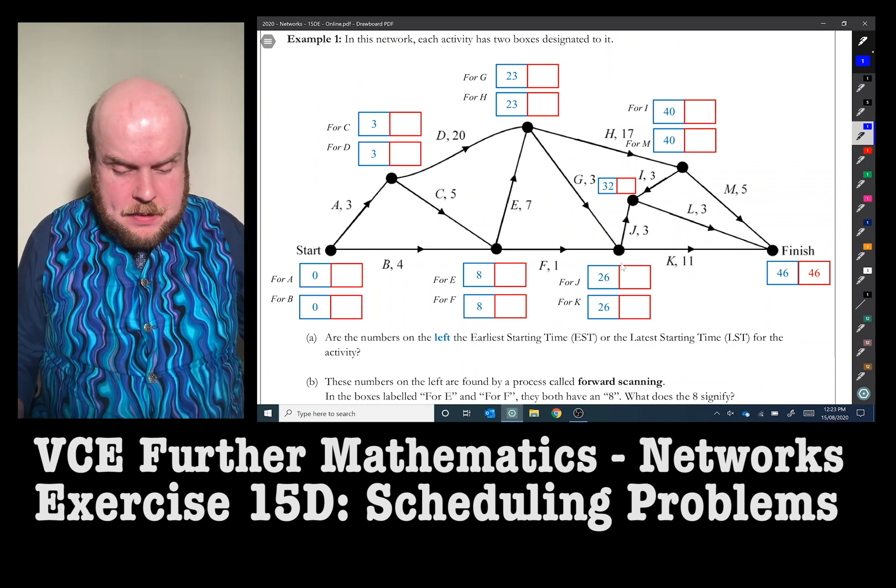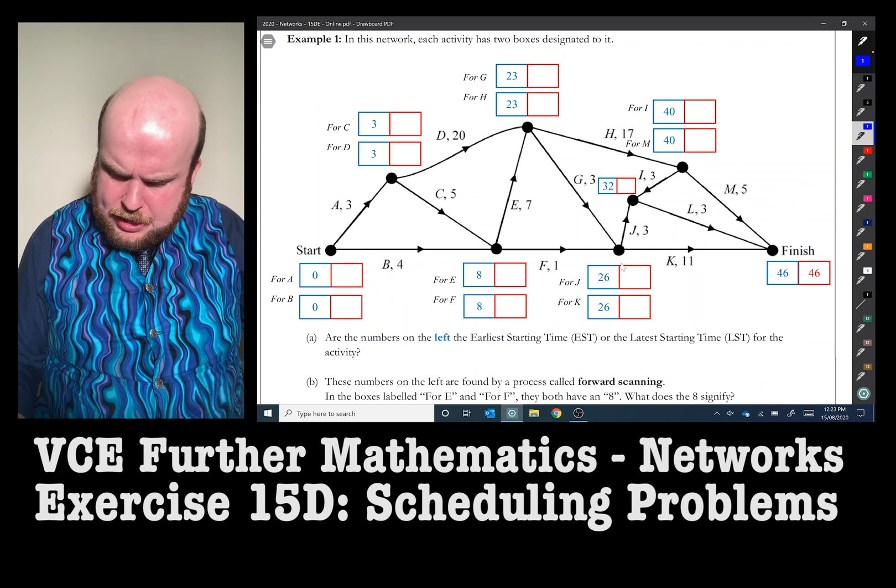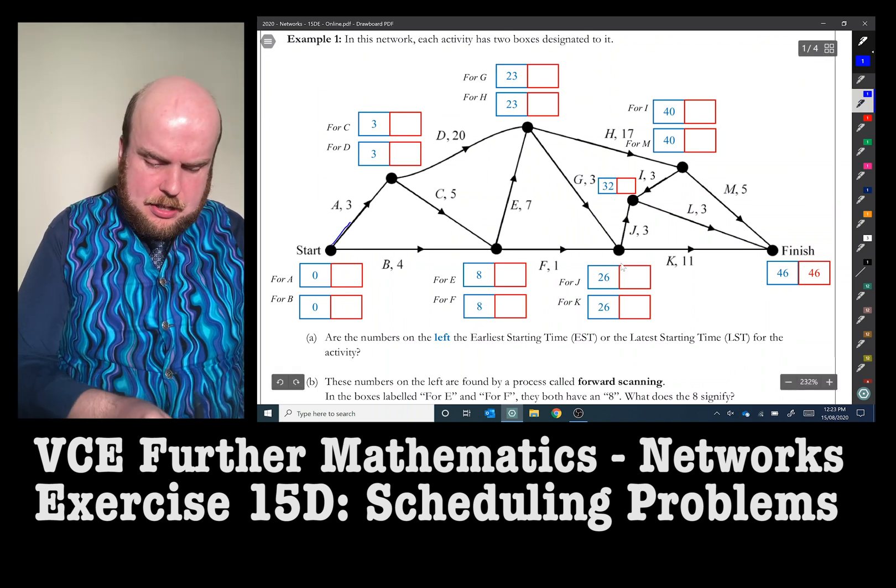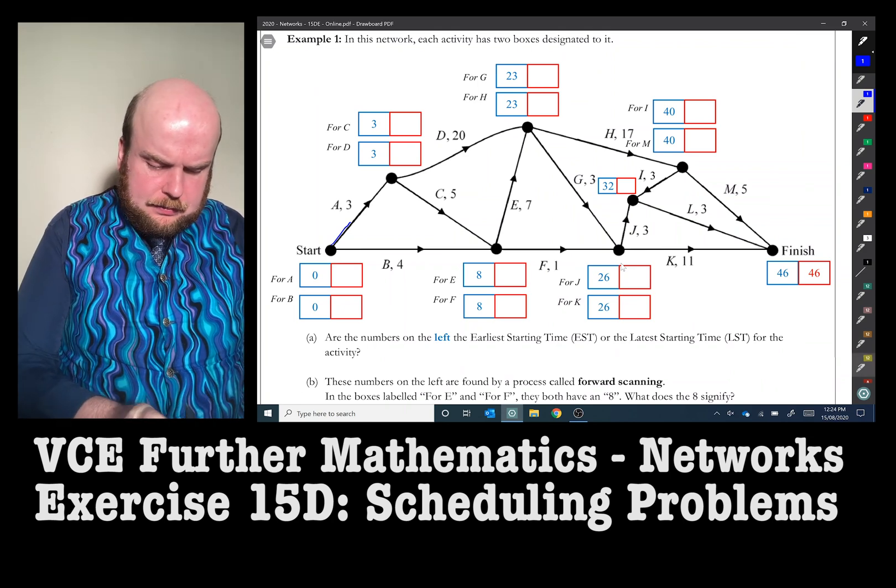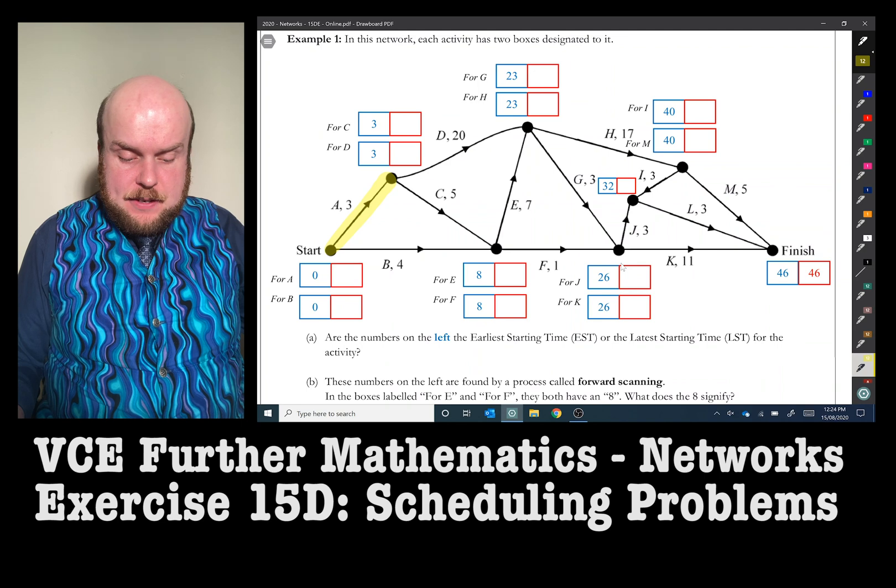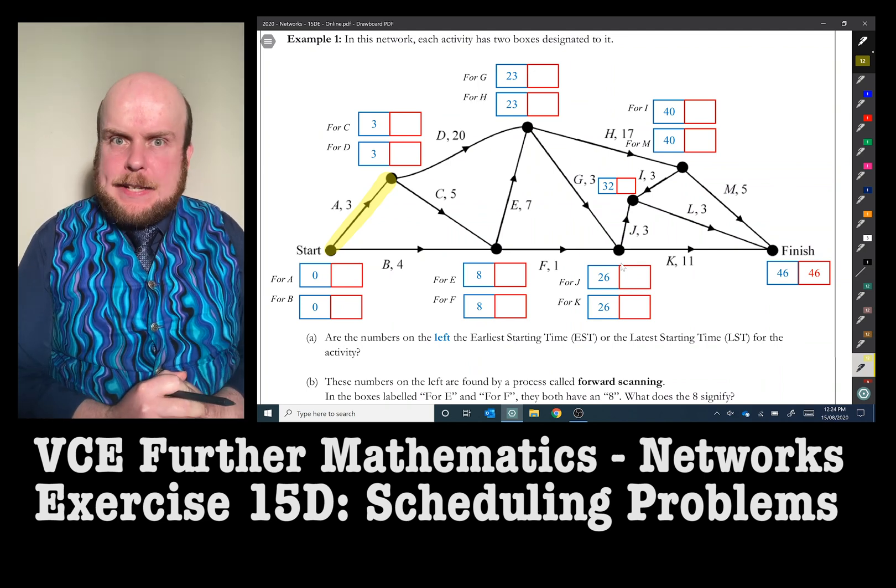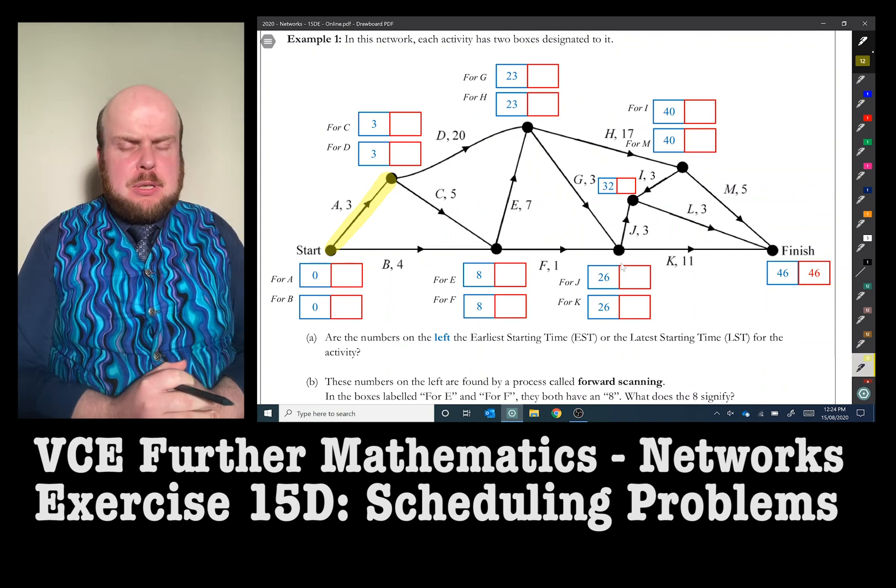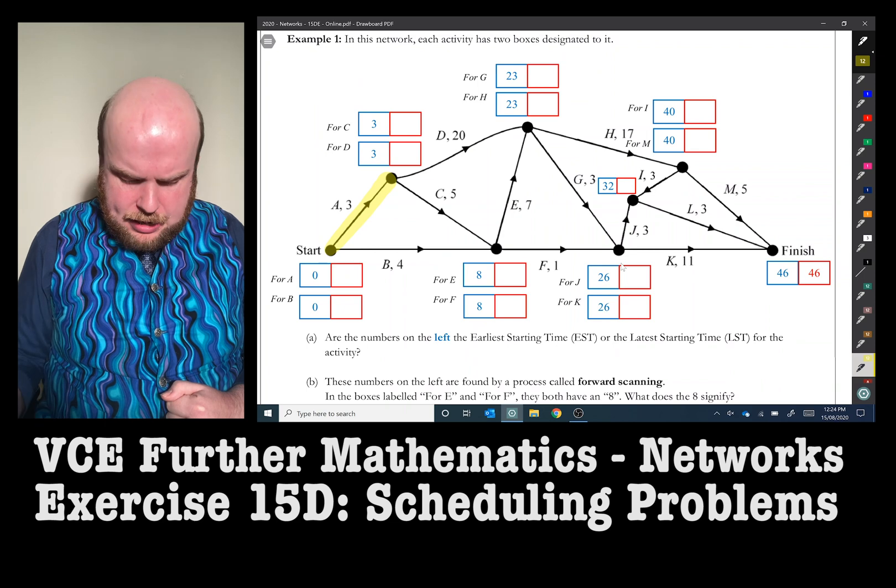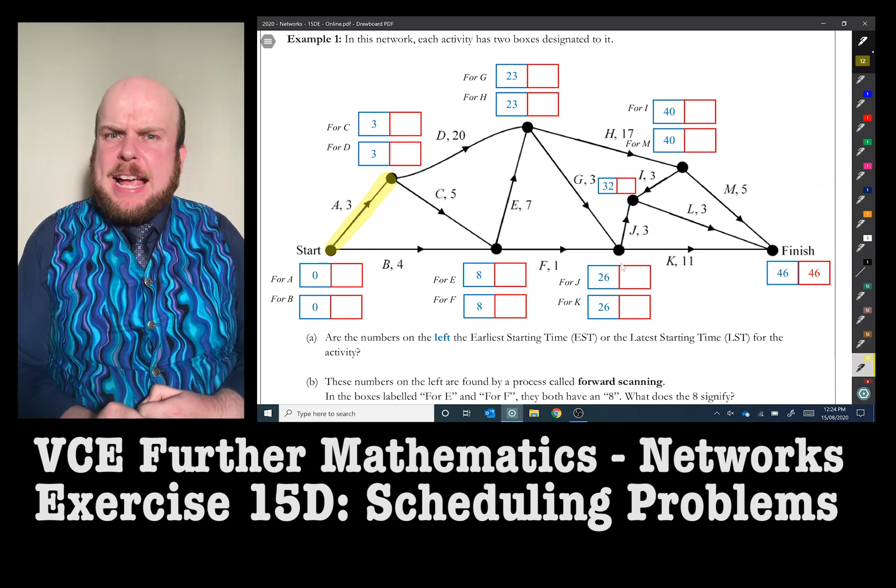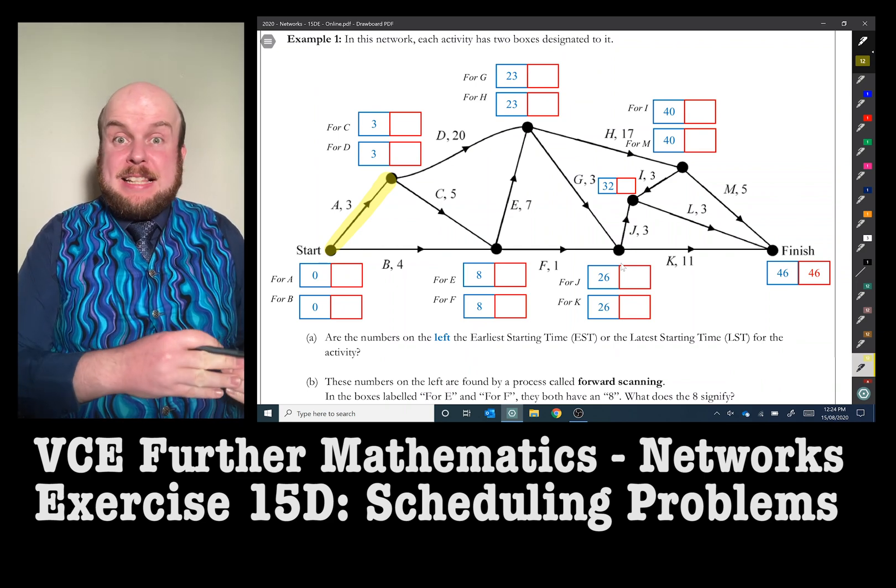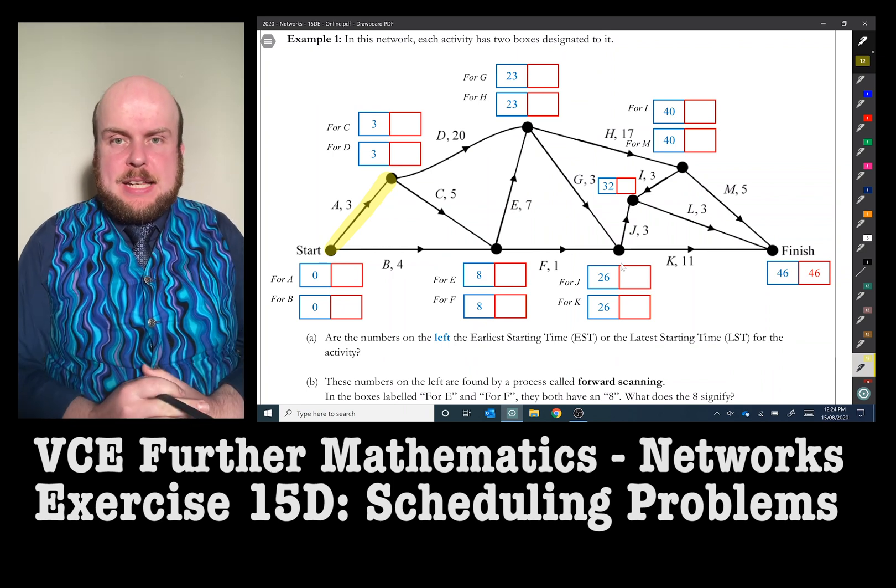So let's have a look at these numbers. Start with A and A has this peculiar set of boxes here. It says for A is zero, for B is zero. There's A up here. Let's get my little highlighter going, shall we? For A is zero, for B is zero, and then it ends to for C is three, for D is three. So what does that mean? Well, I would suggest that if that has a zero there, that would imply that this is the time that I would be starting the activity now, because it takes three hours to get activity A actually done. And so we can see for C and for D, if I want to start D, if I want to start C, I'd have to be at least, it has to take at least three hours for that activity A to be done.